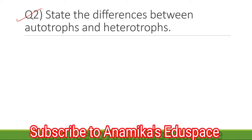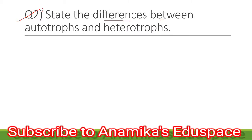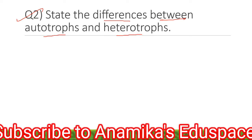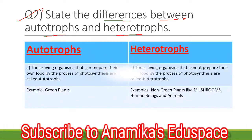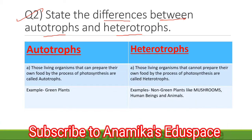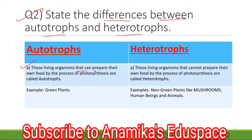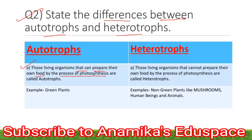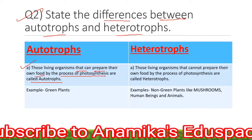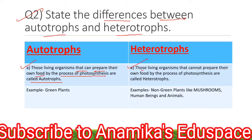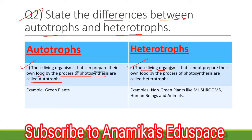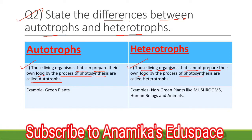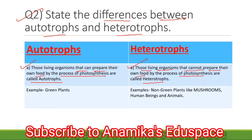Question number 2: State the differences between autotrophs and heterotrophs. The answer goes as: Autotrophs — those living organisms that can prepare their own food by the process of photosynthesis are called autotrophs. Heterotrophs — those living organisms that cannot prepare their own food by the process of photosynthesis are called heterotrophs.